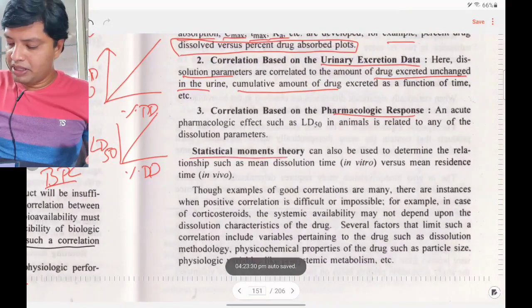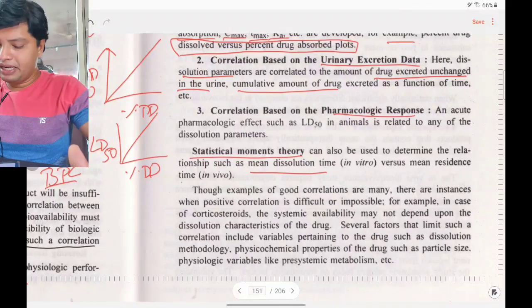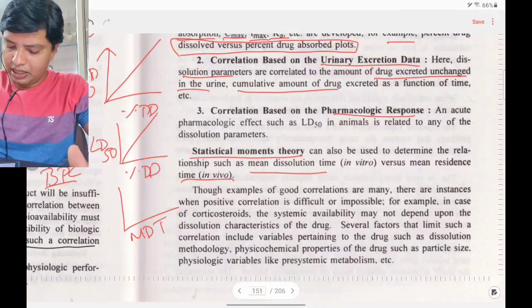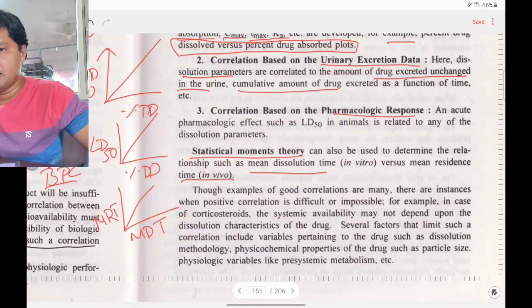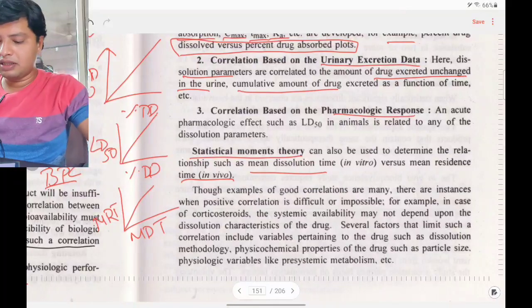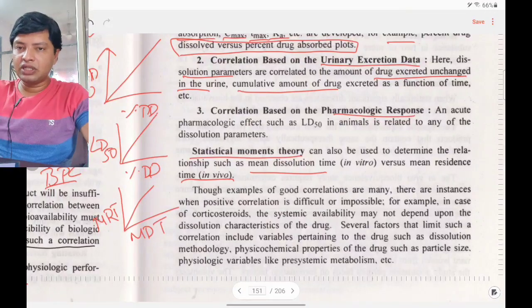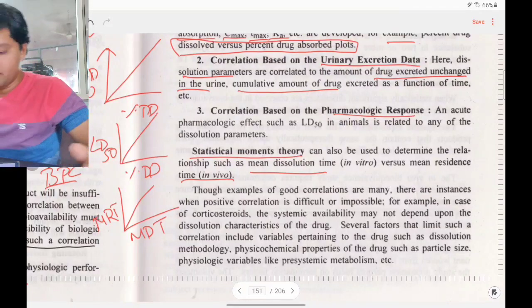Statistical moment theory can also be used to determine the relationship — specifically, mean dissolution time versus mean residence time. So in total, there are four types of IVIVC correlation: plasma concentration, urinary excretion, pharmacological response, and statistical moment theory (mean dissolution time correlated with mean residence time).